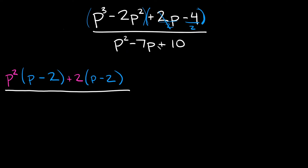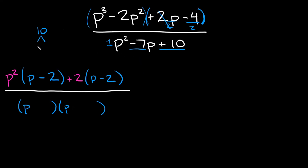Now let's factor the bottom: p squared minus 7p plus 10. There's nothing to pull out from all three terms, and the leading coefficient is 1, so we use two sets of parentheses: p times p. The last number is positive 10 — what two numbers multiply to 10 and add to negative 7? That's negative 5 and negative 2: negative 5 times negative 2 equals positive 10, and negative 5 plus negative 2 equals negative 7. So the bottom factors as (p minus 5)(p minus 2).